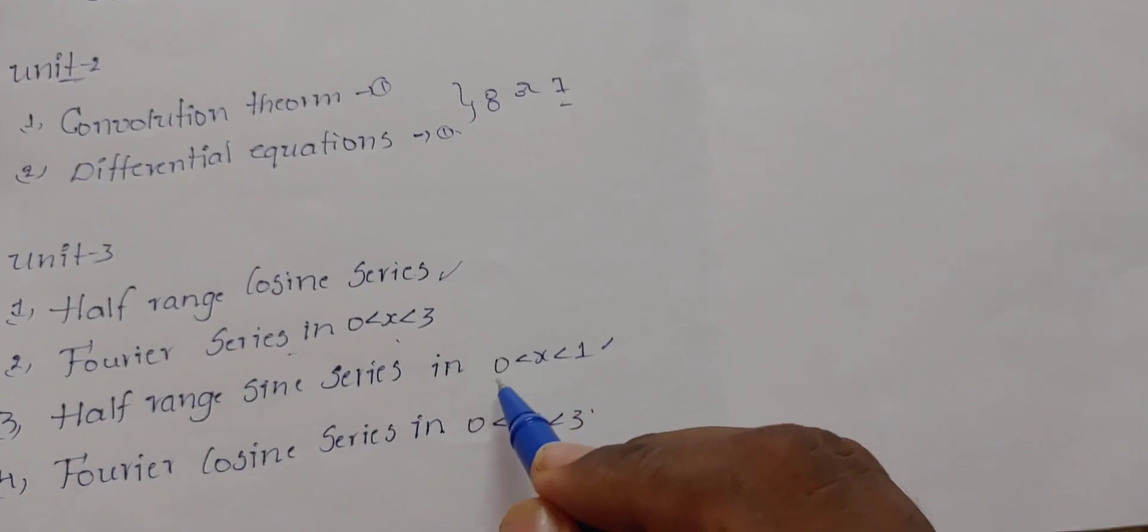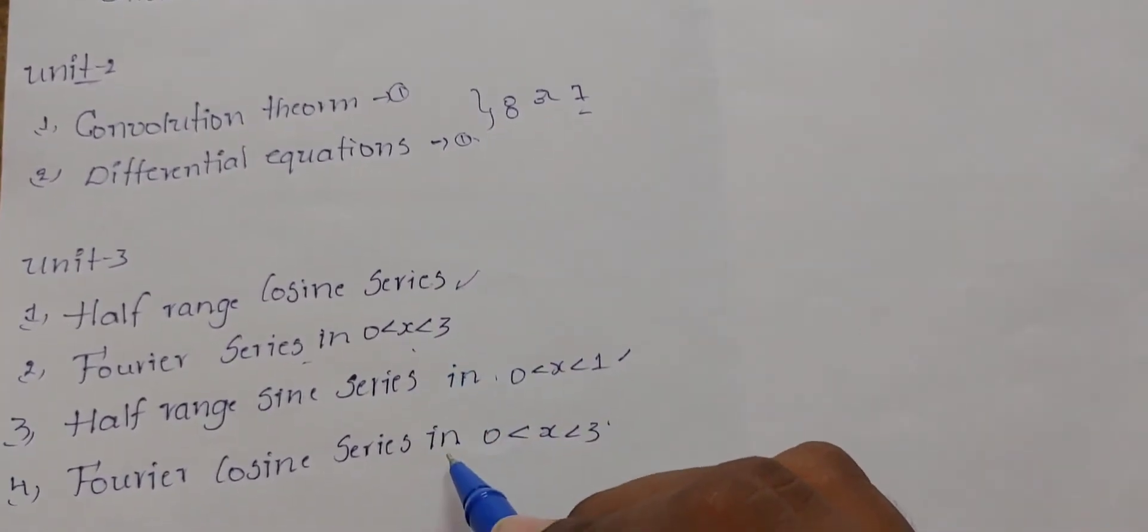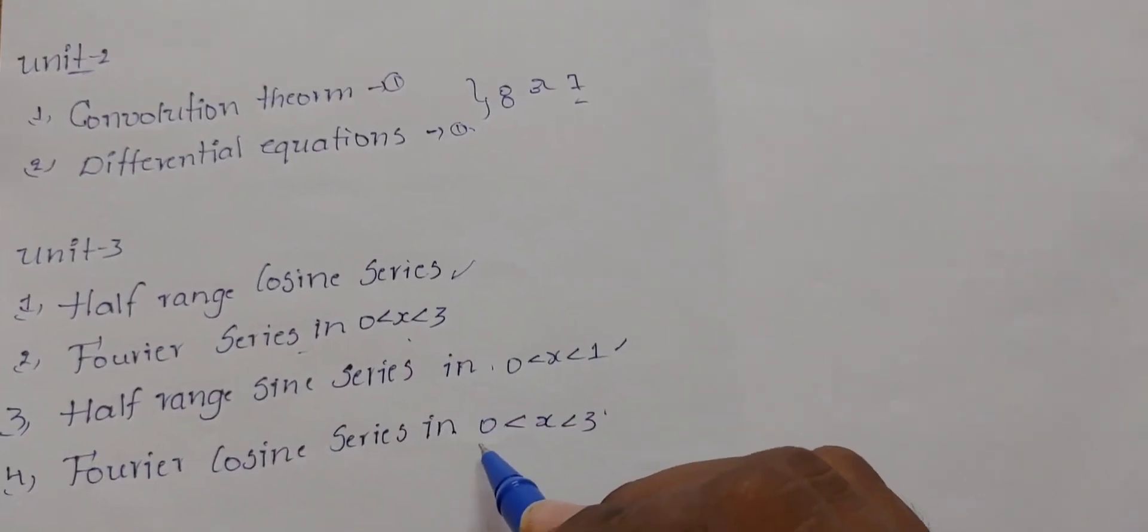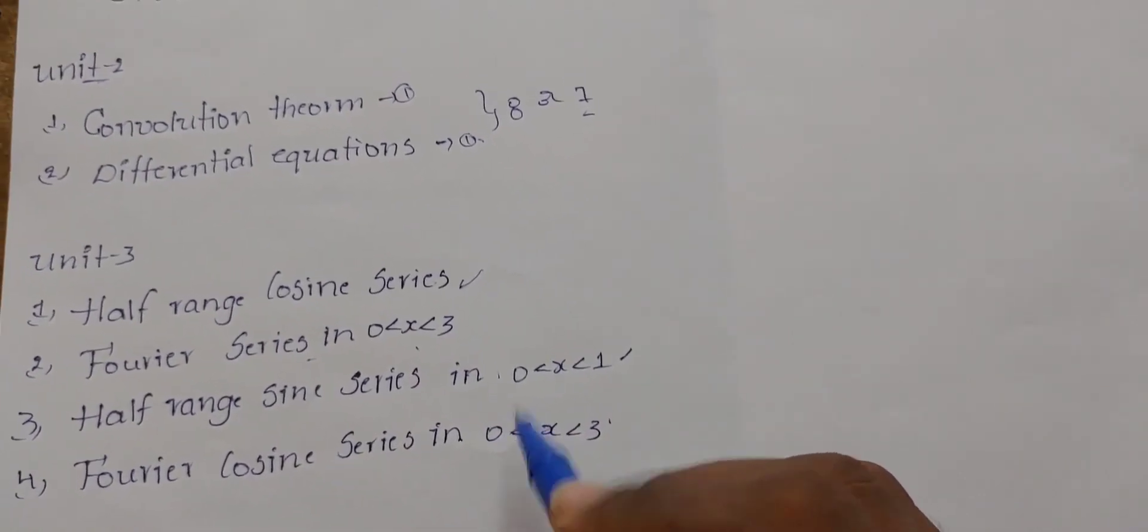The Fourier series is 0 less than x less than 3, and sine is 0 less than x less than 3. If you compare these two compulsory, you will be able to use 8 and 7 marks.